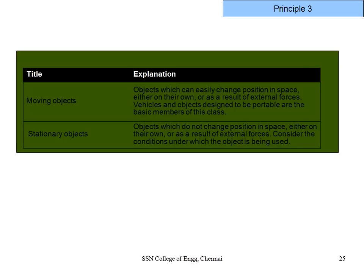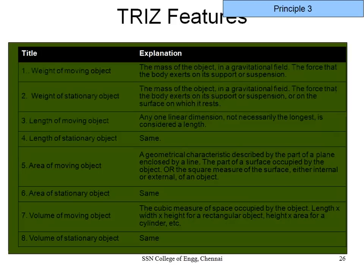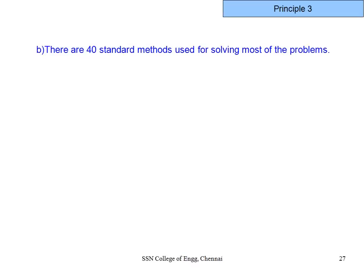The first parameter covers moving objects — things that can easily change position in space, like a car or aeroplane. Stationary objects don't change position. He defines all 39 in this way. For example, 'volume of a moving object' covers problems like increasing airflow for a fan or increasing draft for an aeroplane. By following his definitions and examples, you can identify which of the 39 applies to your problem.